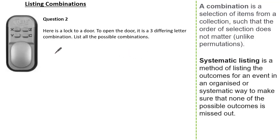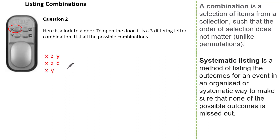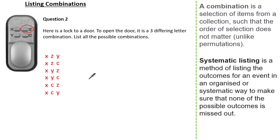Let's devise a system starting with our letter X. X could be followed by Z and then Y, or X followed by Z and then C. So we have two outcomes beginning with X followed by Z. Starting with X but followed by Y, we could then have Z or C. Starting with X again, it could be followed by C then Z, or X followed by C then Y. You can see all our combinations where we started with the letter X.